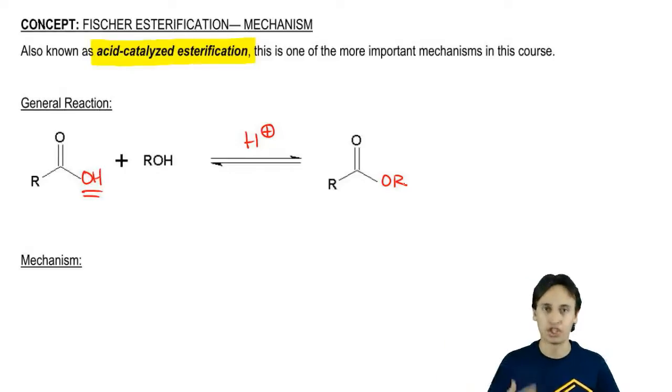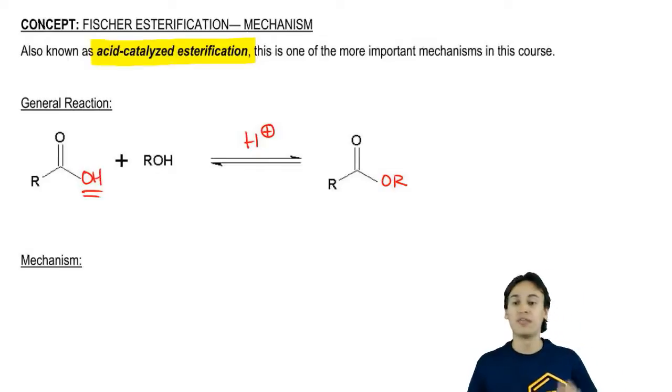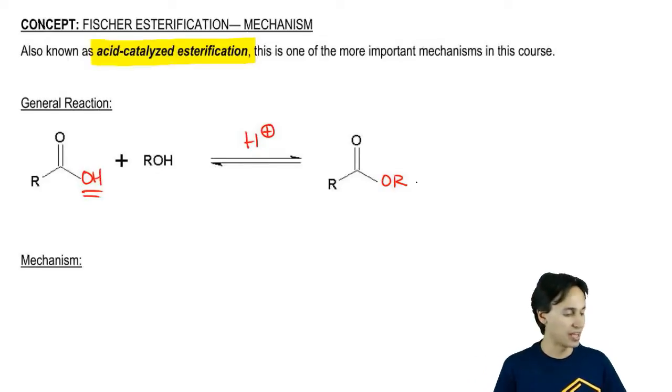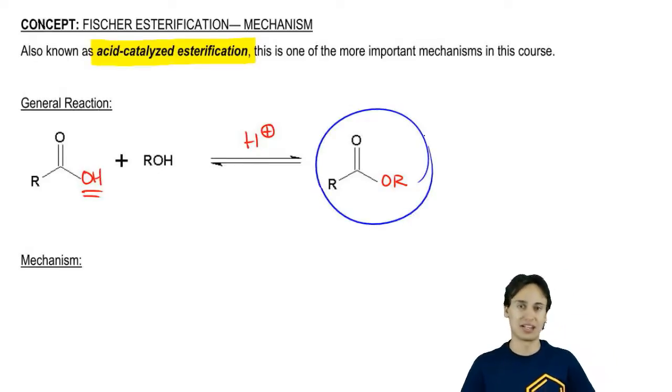I'm going to show you guys how to push all the arrows. For right now, all I want you to know is that Fischer esterification is a way to make esters from carboxylic acids. Now let's move on to the actual mechanism.